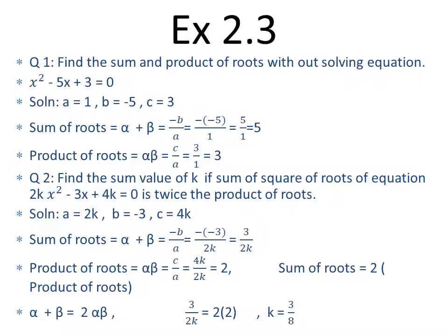Question number two میں کہا ہے: find the value of k if sum of roots of equation 2x² - 3x + 4k = 0 is twice the product of roots۔ یہاں ہمارے پاس a, b اور c کی value given ہے، right side پر zero ہے، standard form موجود ہے۔ alpha plus beta = -b/a لگایا، alpha times beta = c/a لگایا، دو answers آگئے۔ پھر condition: sum of roots = 2 times product of roots، یعنی alpha plus beta = 2 times alpha times beta — values put کی اور k کی value نکالی: that is 3/8۔